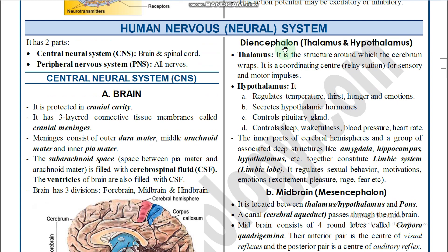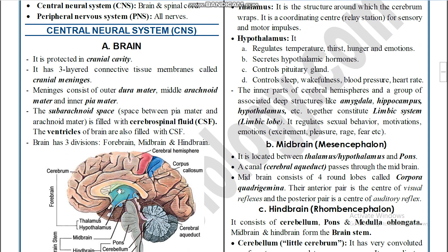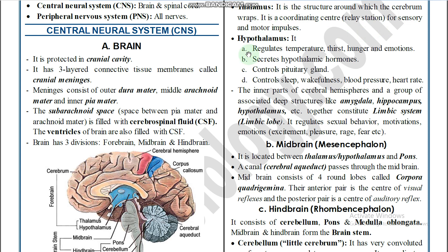Next is the diencephalon, which consists of two parts: thalamus and hypothalamus. The thalamus is the structure around which the cerebrum wraps. It acts as a coordinating center and relay station for sensory and motor impulses. Stimulations received by the sense organs pass to the thalamus, where responses are also generated.